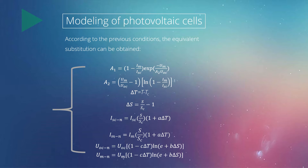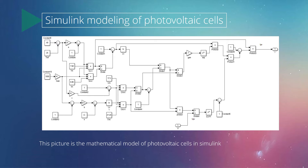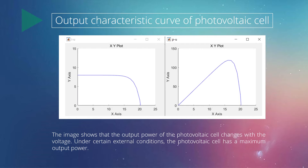According to the previous conditions, the equivalent substitution can be obtained. The picture shows the mathematical model for photovoltaic cells in Simulink. We can get the output curve of the photovoltaic cells through simulation. The image shows that the output power of the photovoltaic cell changes with voltage, and under certain external conditions, the photovoltaic cell has maximum output power.